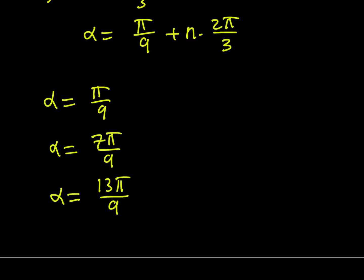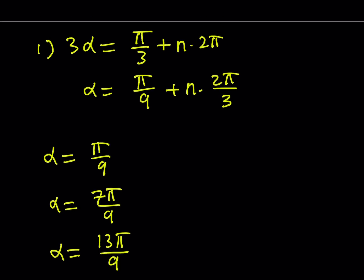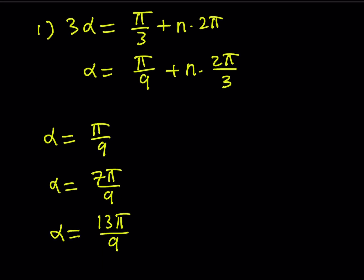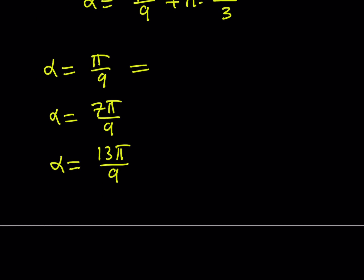Now, these are all the solutions, but they're not the x values. What is x equal to? Well, remember that we said that x equals cosα. So, that's going to be my back substitution. Let's go ahead and find the x values from here. The x value is just going to be cos(π/9), and then from here, x is going to be cos(7π/9), and then finally, x is going to be cos(13π/9).